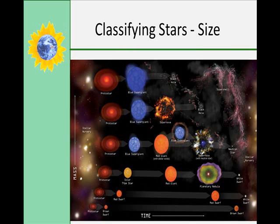Stars can vary greatly in size. Giant stars are typically 10 to 100 times larger than our sun, and more than 1,000 times the size of a white dwarf. This is called the Hertzsprung-Russell diagram, and it shows the different types of stars and classifies many, including our own, in the main sequence.